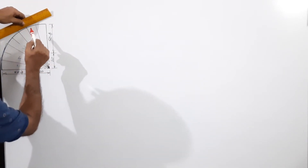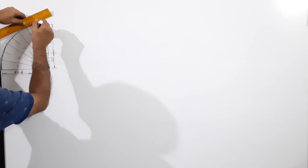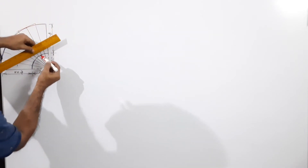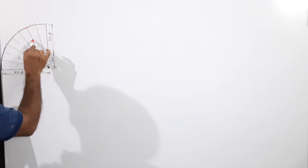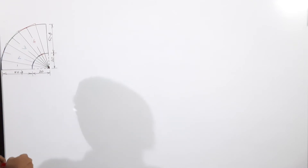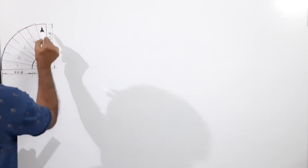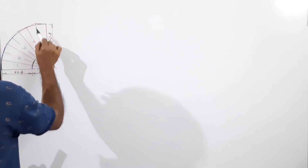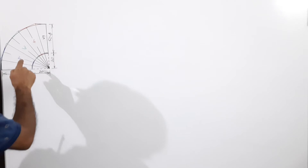We draw a tangent here and at this point, and a tangent at this point, so that we get another piece called piece four. Then we draw one more — you get a horizontal line here and a horizontal line here — this is piece five. So piece one and piece five are identical; pieces two, three, and four are of double the size.